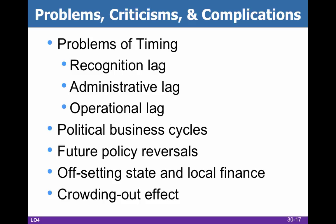Timing is difficult. We have three lags: recognition, administrative, and operational. Recognition lag means we don't know if we're in a recession right now — we could technically be in one today and won't know for three months because we have to wait for all the numbers to come out. Once those numbers come out, we have to make up our mind about what to do to fix it — that's administrative lag, which takes Congress either a short or long time. Then once they make up their mind, there's operational lag — while whatever they do actually works. You can't just spend money and have everybody feel different the next day.